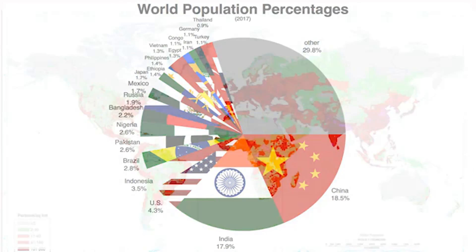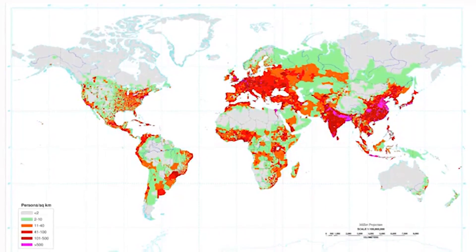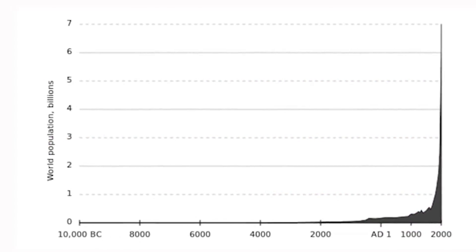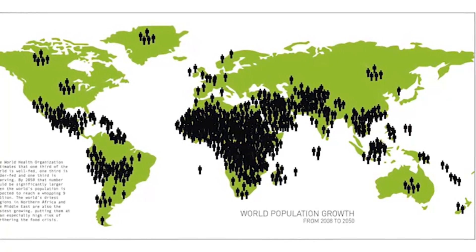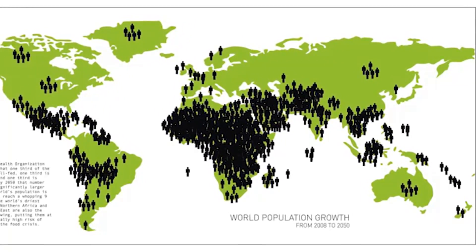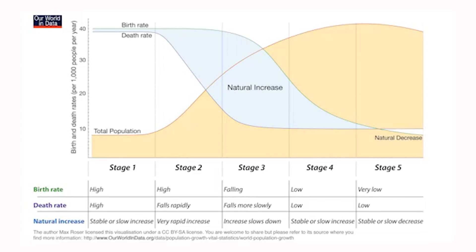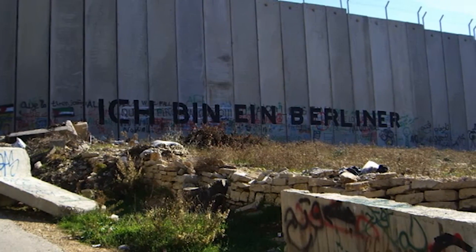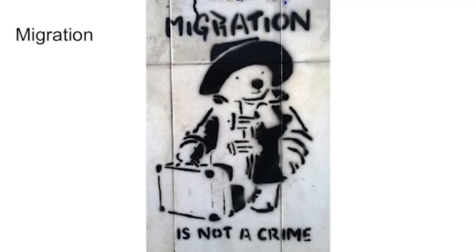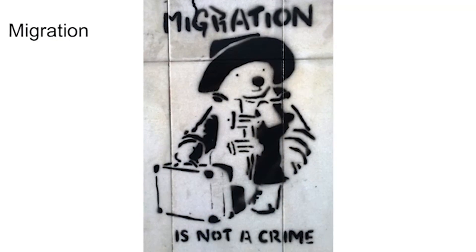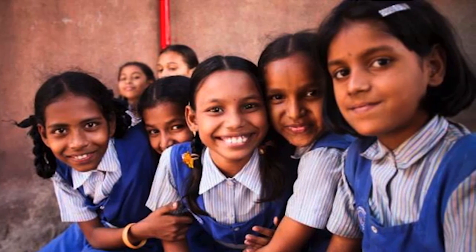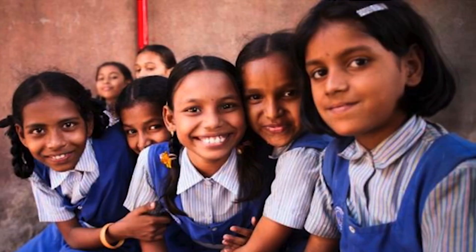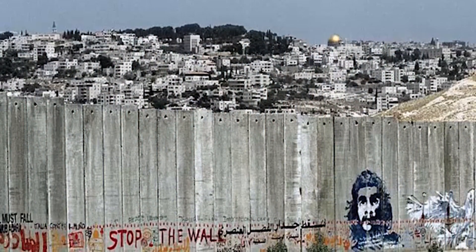Welcome to Unit 2. In this unit, you'll learn what demography is, how geographers study population, and how it affects you. We will analyze the distribution of human population at different scales, from global to local. We will look at trends in population growth and decline over time and space based on trends in fertility, mortality, and migration. We will study how access to education and healthcare slows fertility rates in different parts of the world and its effects on overall global population.